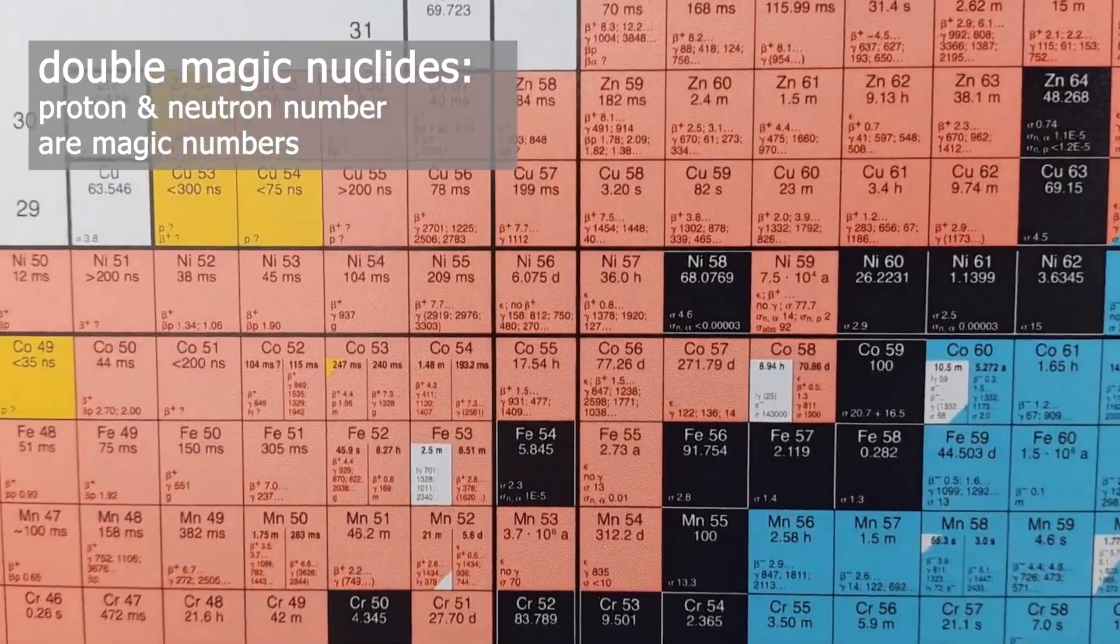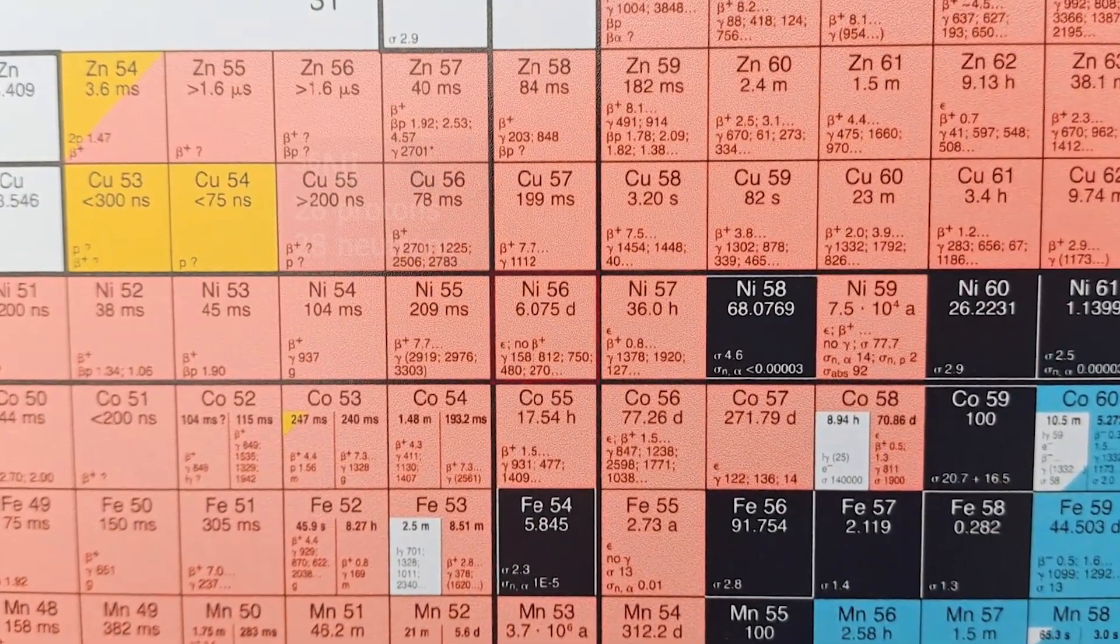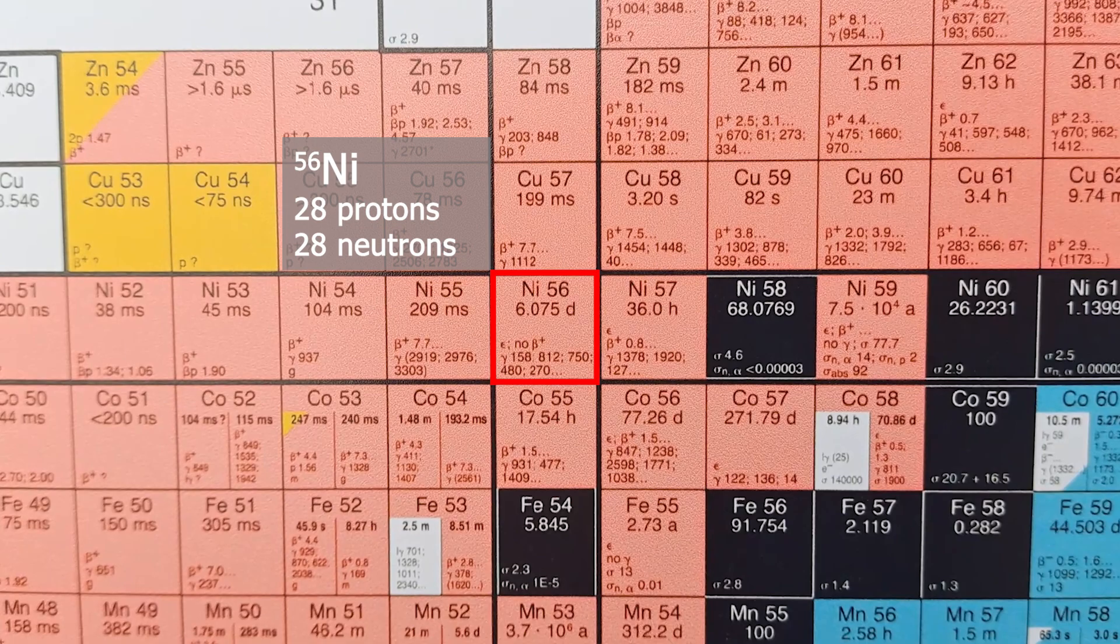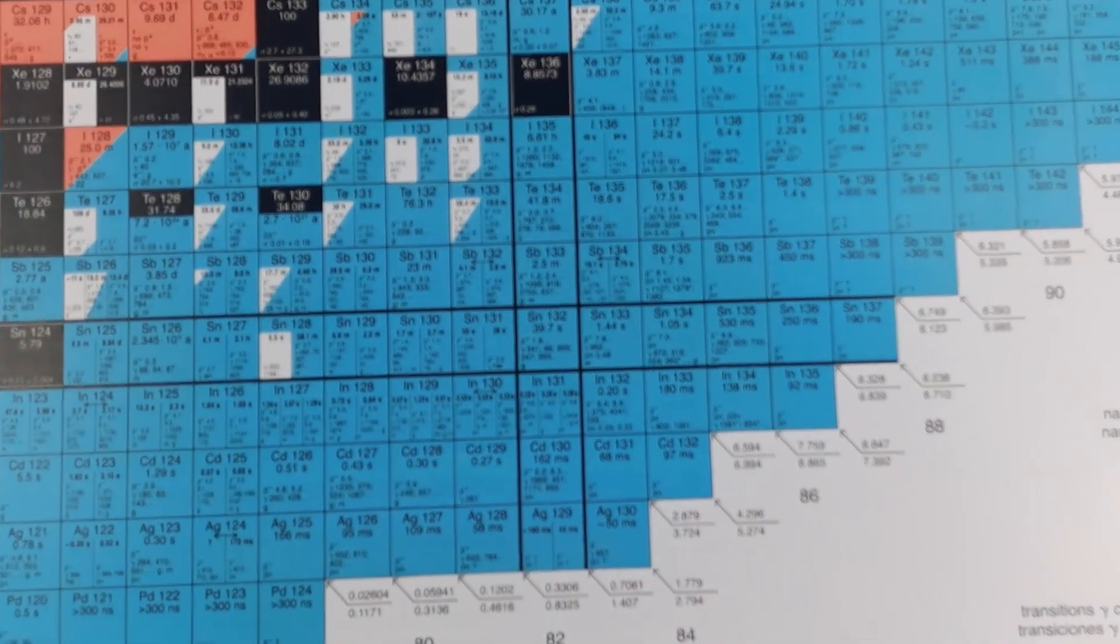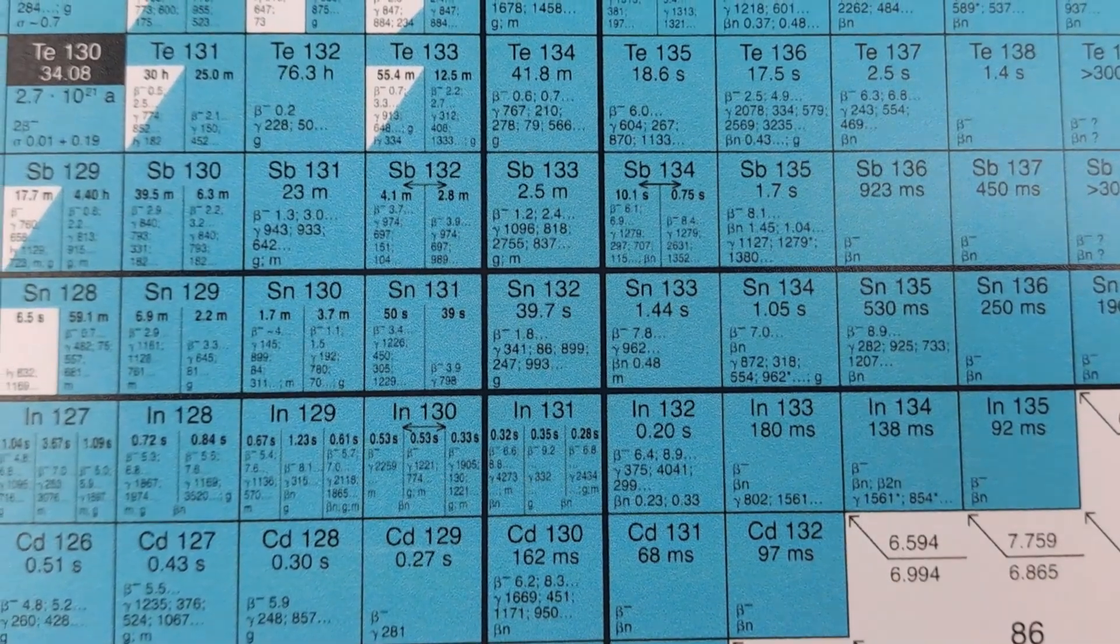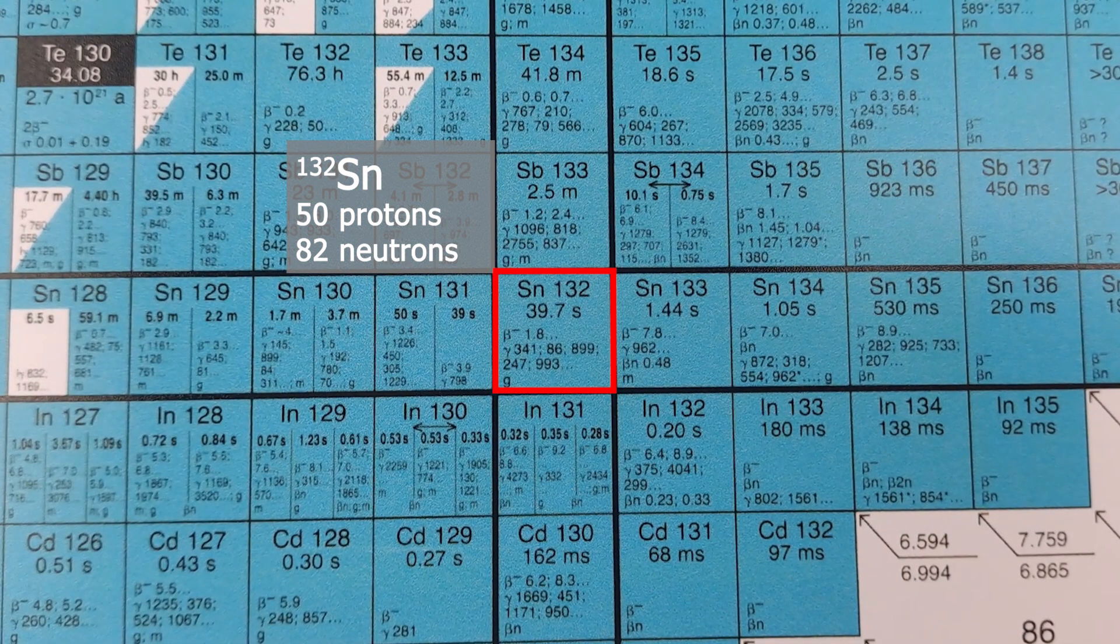They might not be entirely stable but you can recognize them that they have a significantly longer half-life compared to their neighbors. For example nickel 56 with a magic proton number of 28 and a magic neutron number of also 28, or tin 132 with a magic proton number of 50 and a magic neutron number of 82.